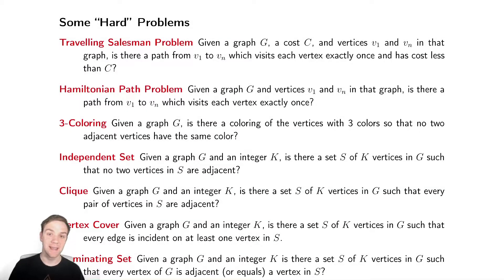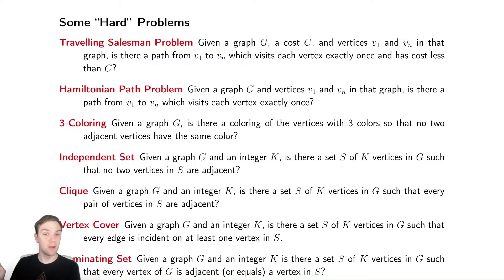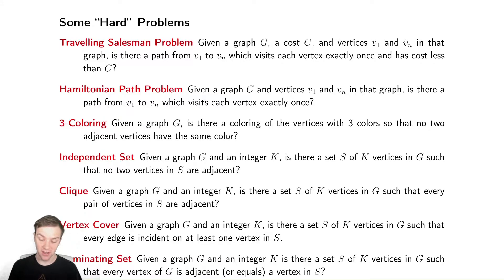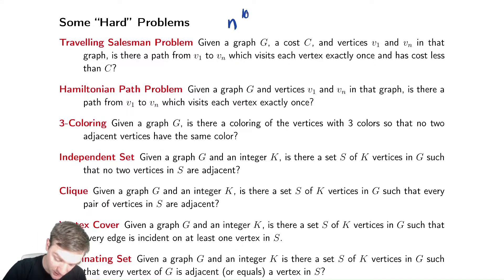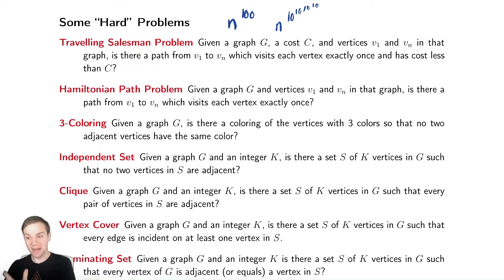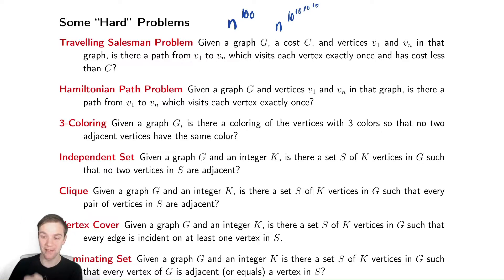It turns out that the Hamiltonian path problem and the traveling salesman problem are both hard problems. We have yet to come up with a polynomial time solution. Notice that includes things like n to the 100 and n to the 10 to the 10 to the 10, and so on. We have no polynomial time solution to any of these problems.